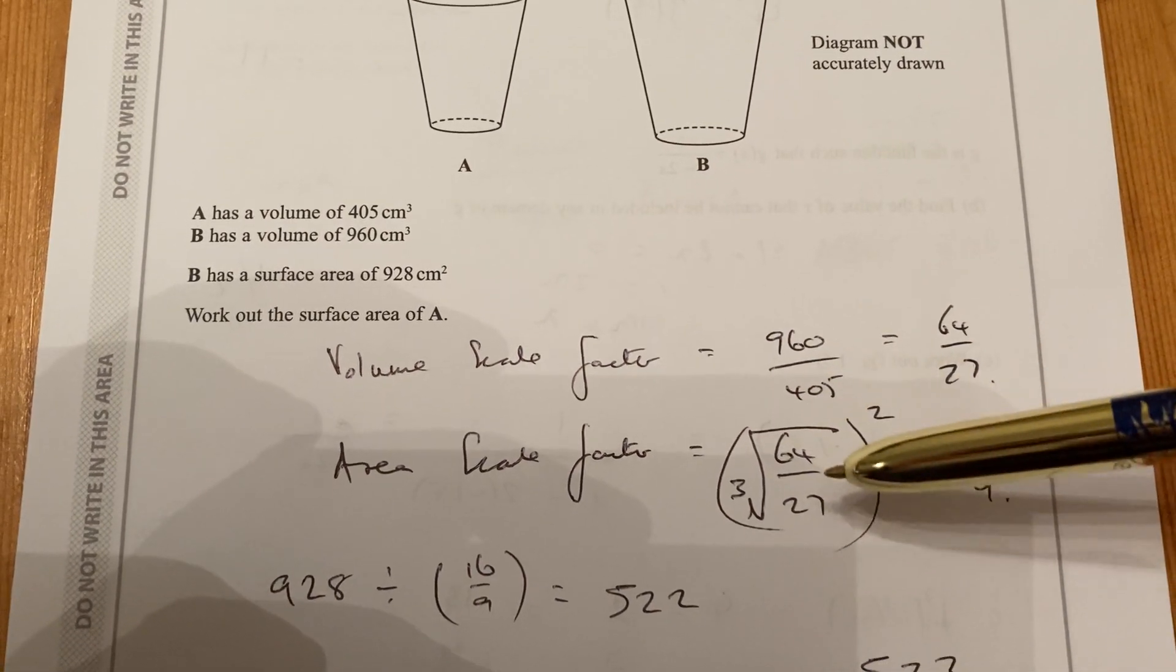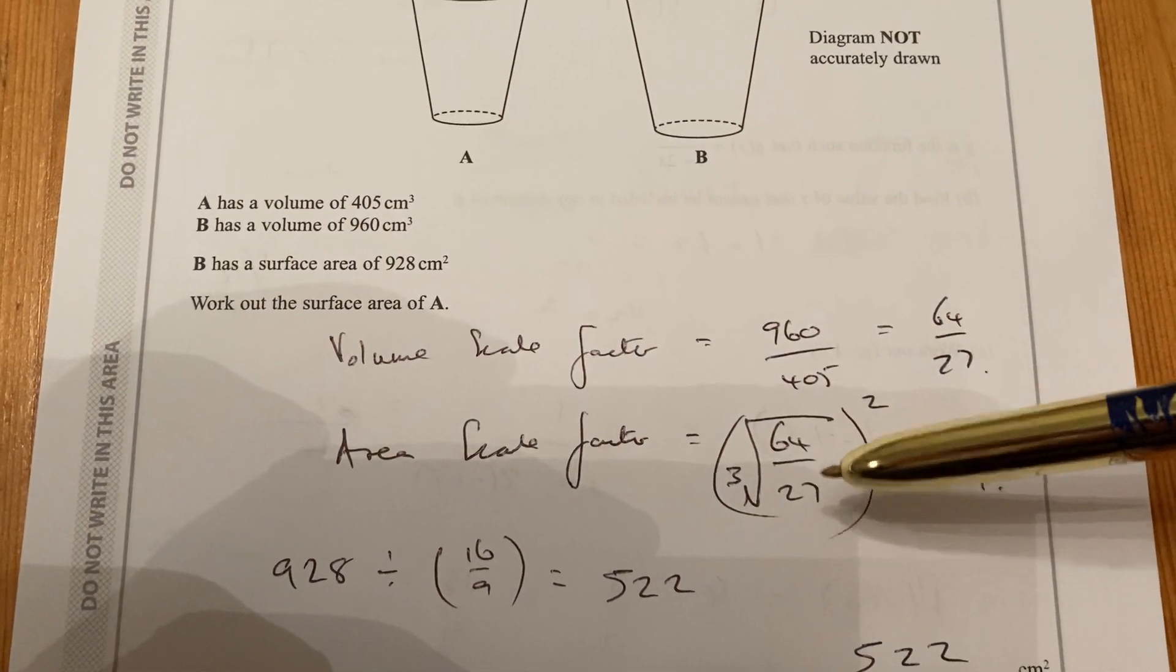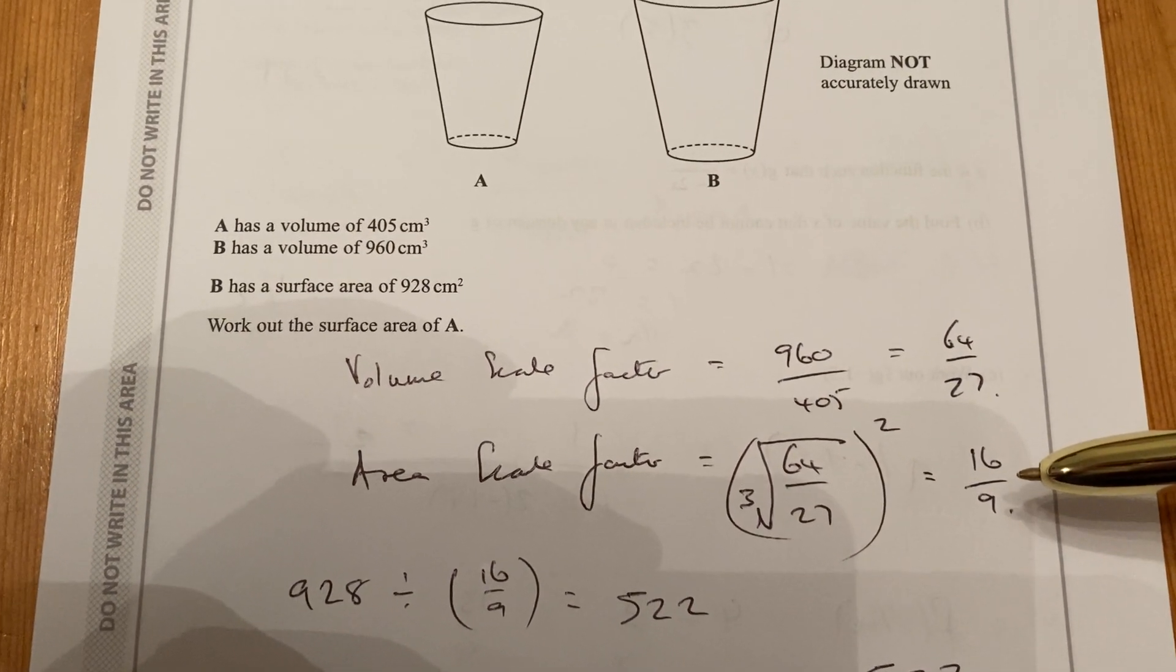These are nice numbers, 64 and 27, because you can cube root and square each of those, and it comes out to be 16 over 9.